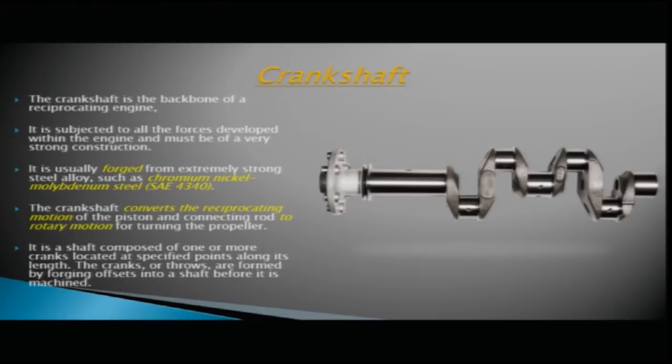The crankshaft is a forging made of extremely strong CNM steel SAE 4340. The basic purpose of the crankshaft is to convert the reciprocating motion of the piston and connecting rod to rotary motion for turning the propeller. It is a shaft composed of one or more cranks located at specified points along its length.